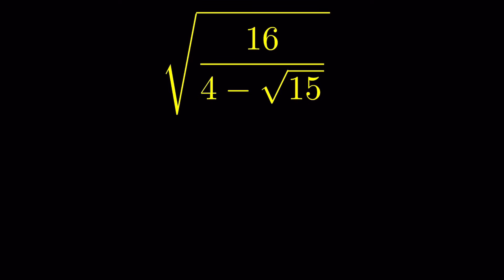We have 16 upon 4 minus square root of 15, all under square root, and we have to simplify it. Within the square root, we have a number and a radical in the denominator, so let's first rationalize the denominator.